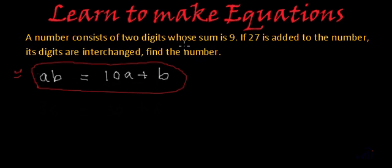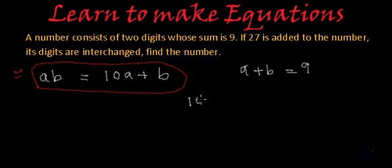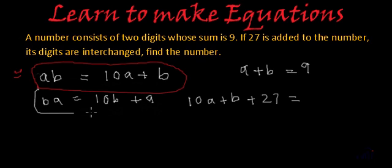So what they say? They say the sum of their digits is 9. That means A plus B is 9. And then they are saying when 27 is added to the number, what is our number? Our number is AB, whose actual value is 10A plus B. So if we add 27 to 10A plus B, its digits are reversed. That means AB will become a number like BA, whose actual value is 10B plus A.